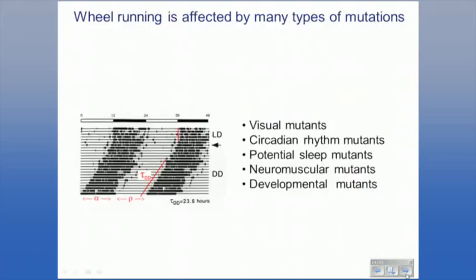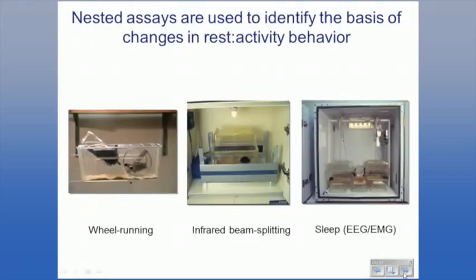Using wheel running you can get mutants not just in motility but also visual mutants that don't know if it's light or dark, circadian rhythm mutants that lose their period, neuromuscular mutants that have trouble running, and sleep mutants that are waking up when they should be sleeping. Then you go on to more expensive tests — for example, putting an EEG on candidate sleep mutants to see if they have sleep defects identifiable by that more expensive assay.